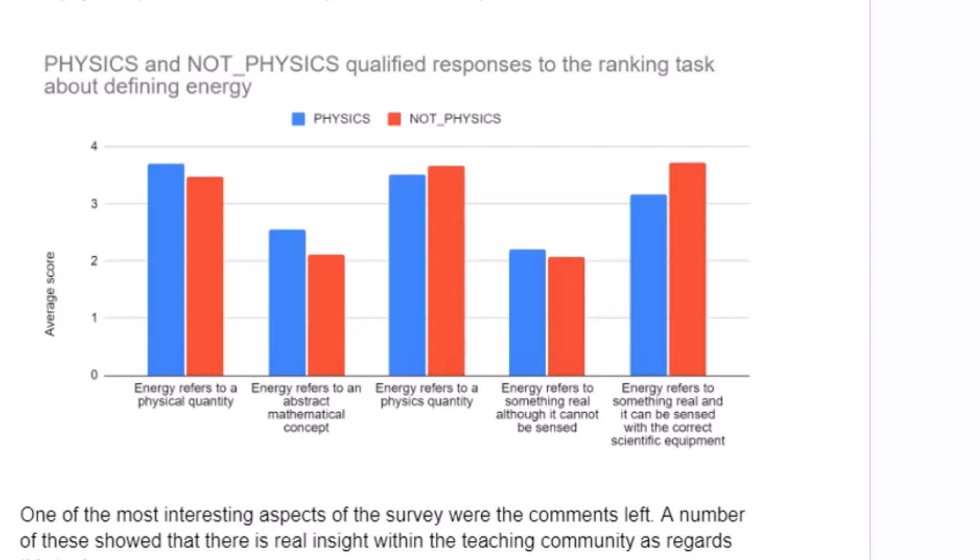What's on screen at the moment is the results of questions about defining energy. You'll see that we've got blue for those people who were physics qualified and red for those who were not physics qualified. You can see there's not a great difference in the responses. It's slightly worrying — we're not really sure if it's just a language issue or a lack of familiarity — but the second statement, 'energy refers to an abstract mathematical concept,' was quite low down the ranking, second from the bottom. The research and literature and physicists generally tend to disagree with that being placed so low.